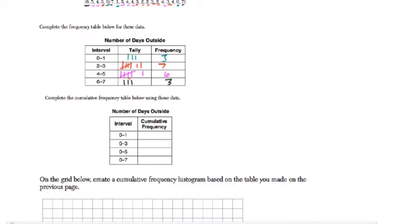So 0 through 1, we have 0, 1, 2, 3. So I agree with that. Next one, I said 7 for 2 to 3. Let's check that. 1, 2, 3, 4, 5, 6, 7. Okay.